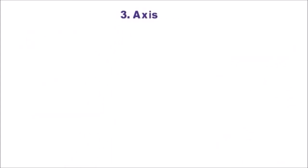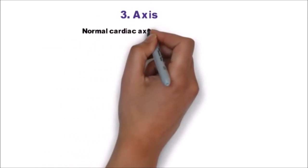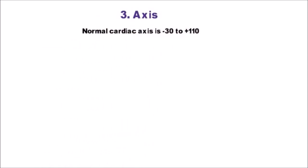Now step 3 is to calculate the axis. First of all normal cardiac axis is from minus 30 to plus 110 degree.